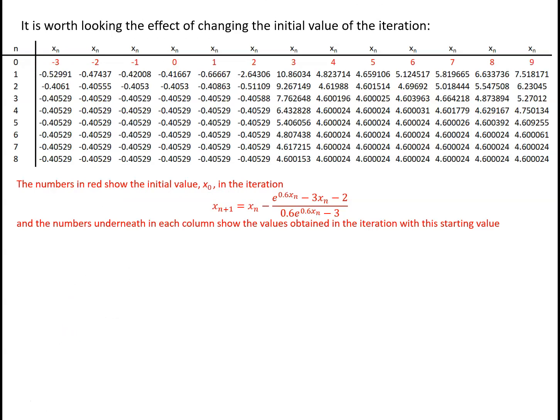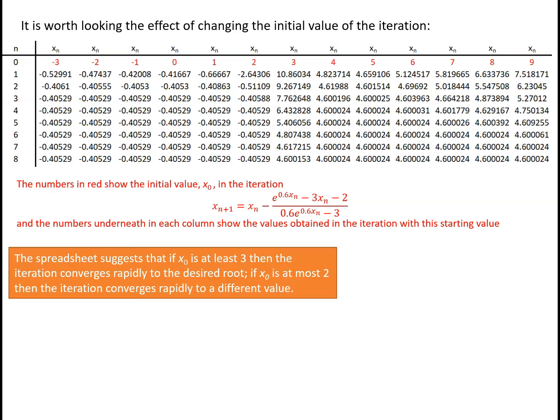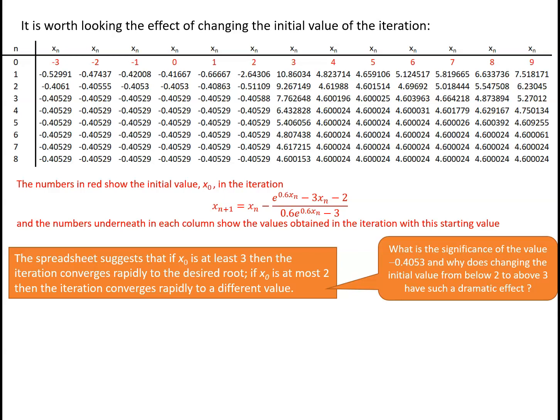It's worth looking at the effect of changing the initial value of the iteration. Starting with x0 = 4 gave the values we obtained before. For values of x0 which are 3 or more, the iteration seems to converge nicely to 4.60. However, if x0 is 2 or less, the iteration converges to a different value, namely approximately -0.40529. This raises the question: what is the significance of this second value, and why does changing the initial value so dramatically affect the iteration?